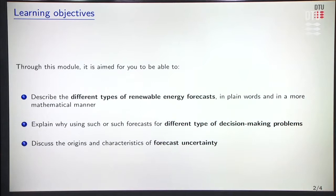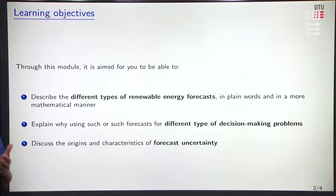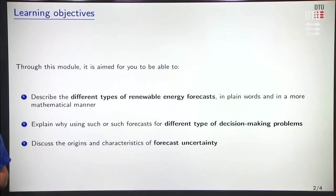Through this module, the various learning objectives will consist in you being able to describe the different types of renewable energy forecasts in plain words and also in a more mathematical manner. I would like you to be able to explain why we use such forecasts for different types of decision-making problems, beside the market participation one discussed in a previous module. Finally, I would like you to be able to discuss the origins and characteristics of forecast uncertainty.